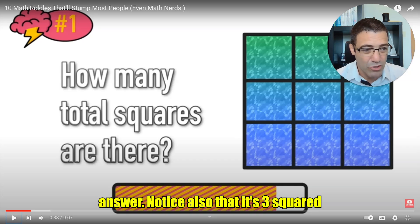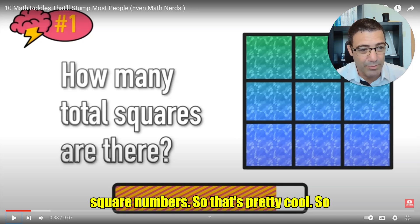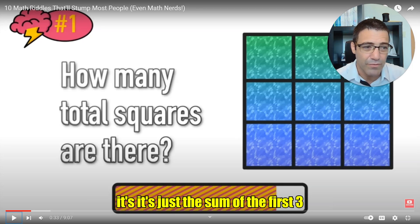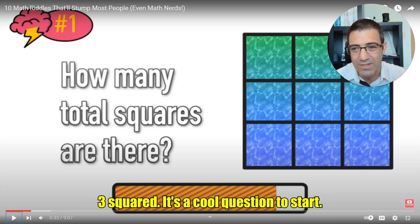Notice also that it's 3 squared plus 2 squared plus 1 squared. So in these kinds of questions, you can use square numbers. So that's pretty cool. So it's just the sum of the first three square numbers, 1 squared, 2 squared, and 3 squared. It's a cool question to start.